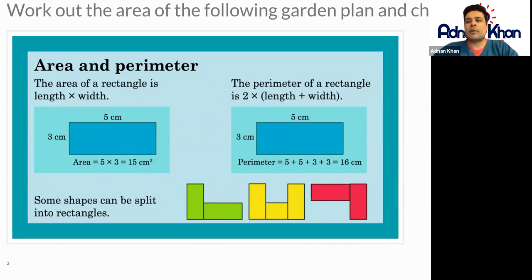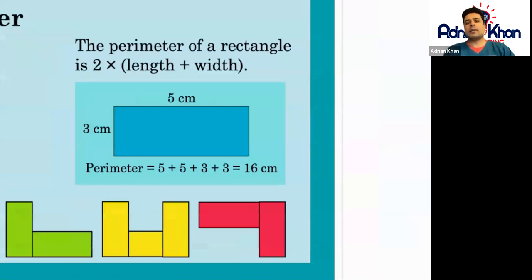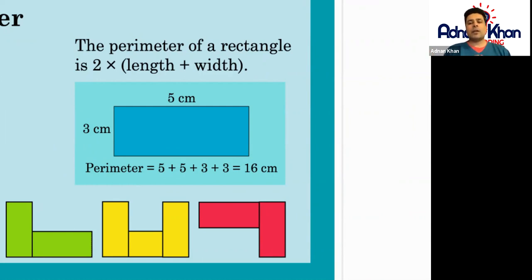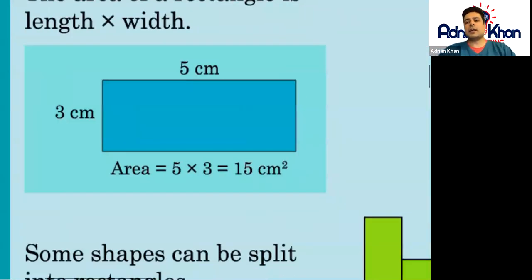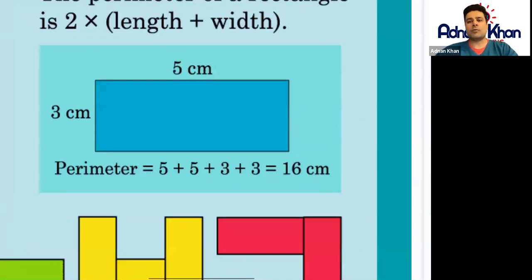The perimeter of a rectangle is basically the measurement around the shape. The length is 5 centimeters and the width is 3. The 5 centimeters also applies on the opposite side, and the 3 centimeters applies on the opposite side as well. So we do 5 + 5 + 3 + 3, which gives us 16 centimeters — the entire distance around this shape. Remember: area is the surface measurement within the shape, but perimeter is the distance around it.